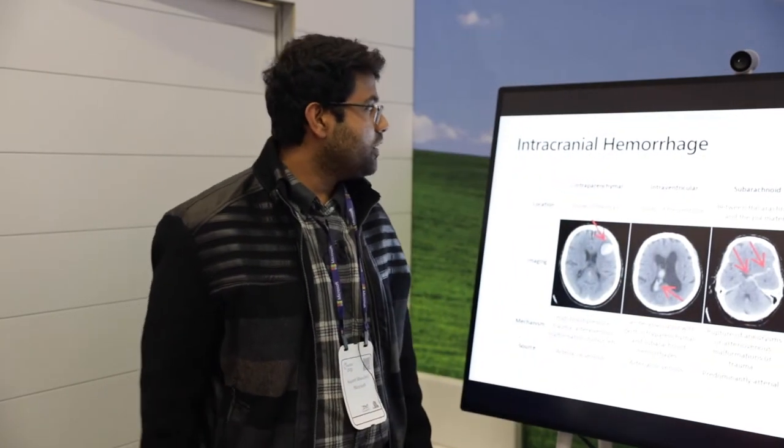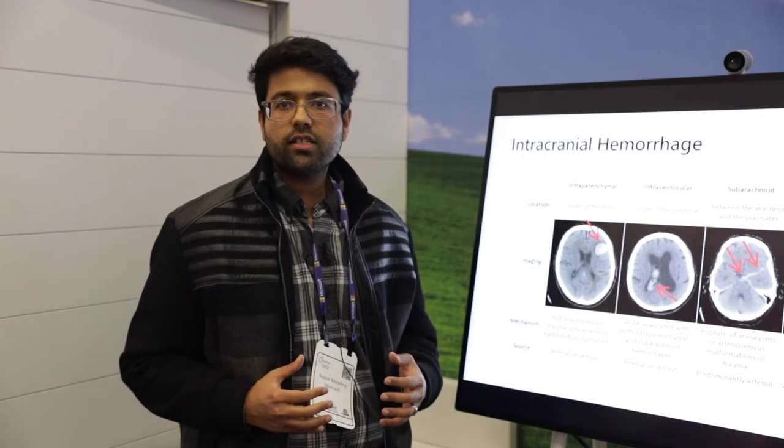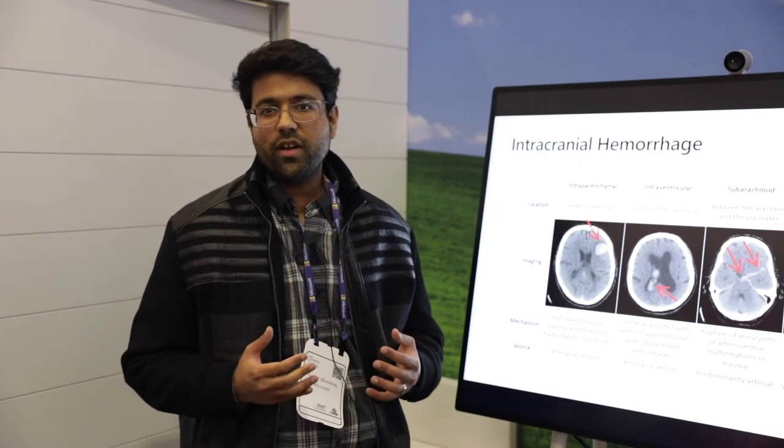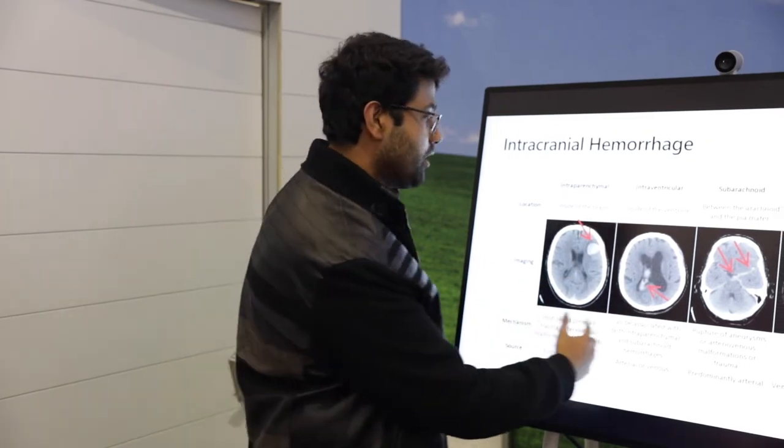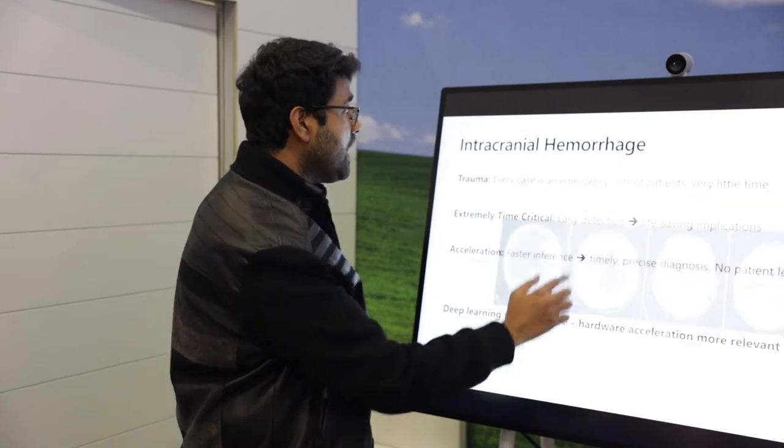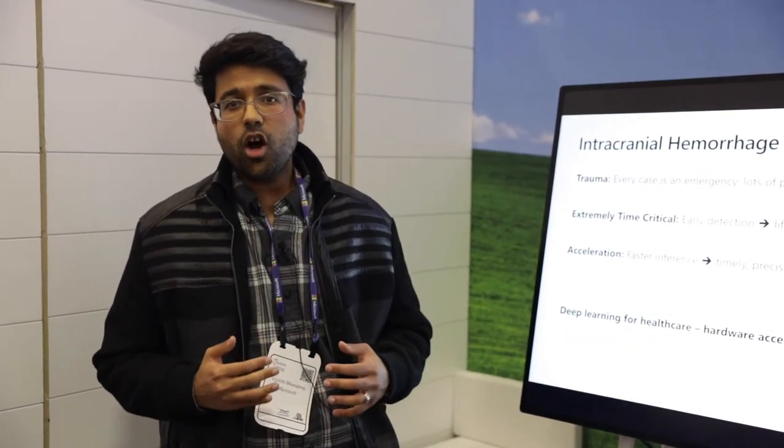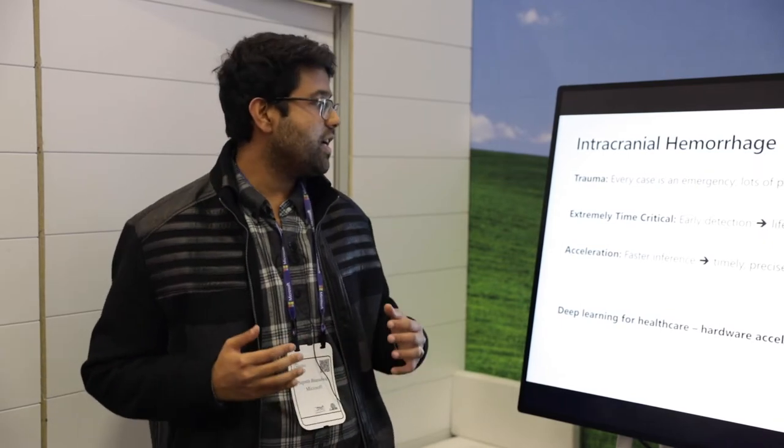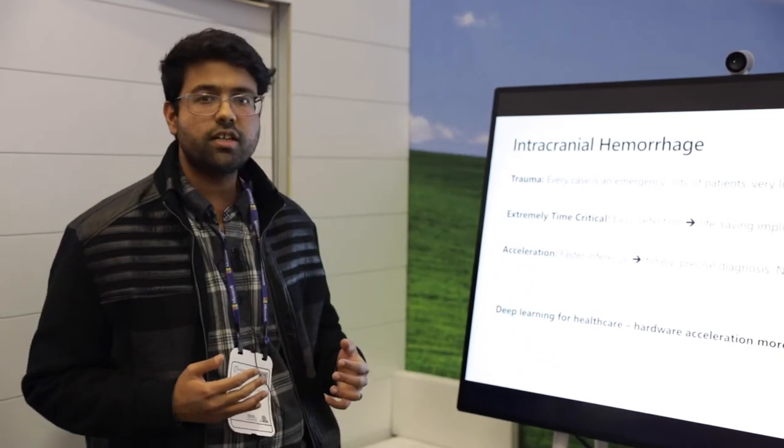So here's a quick demo on the intracranial hemorrhage detection problem. Now, hemorrhages typically occur when an artery ruptures and there are different kinds of hemorrhages. Here's an illustration of what those different hemorrhages are. Now, what's really important is that a leading cause of hemorrhage is trauma, and every case is an emergency. So in an ER scenario, in a trauma scenario, there are lots of patients and very little time.